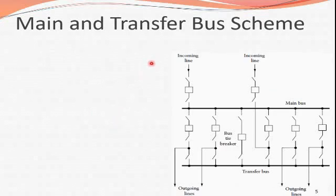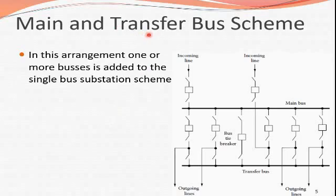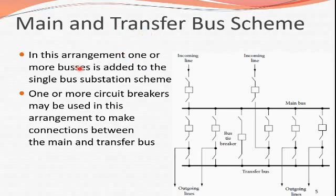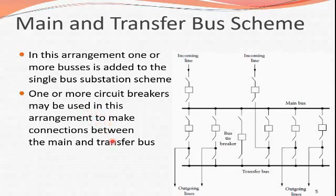The next scheme is main and transfer bus. In this arrangement, one or more buses is added to the single bus scheme. We have two buses: one main bus and one transfer bus, connected by a bus tie breaker. Isolators are also present. One or more circuit breakers may be used to make connections between the main and transfer bus.